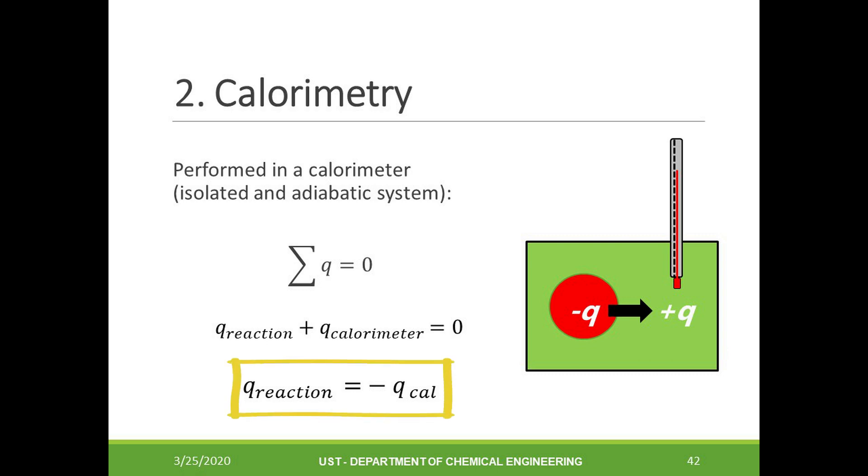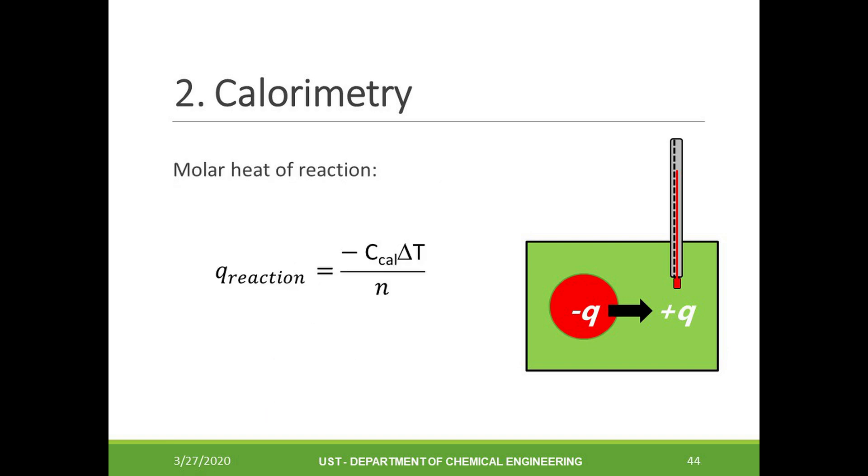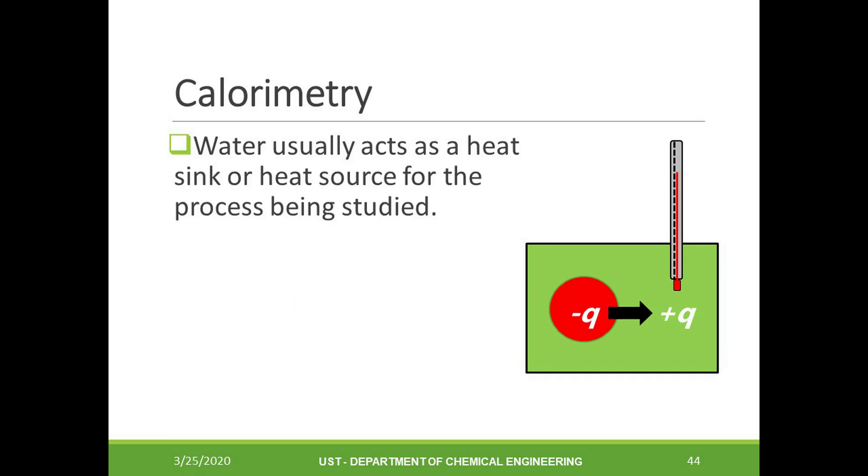In symbols, simply q_reaction is equal to negative q_calorimeter. Using the previous equations, we can therefore calculate the molar heat capacity of the reaction, and this equation is shown in this slide. Remember that n refers to the number of moles of the reactants consumed or the number of moles of the products produced.